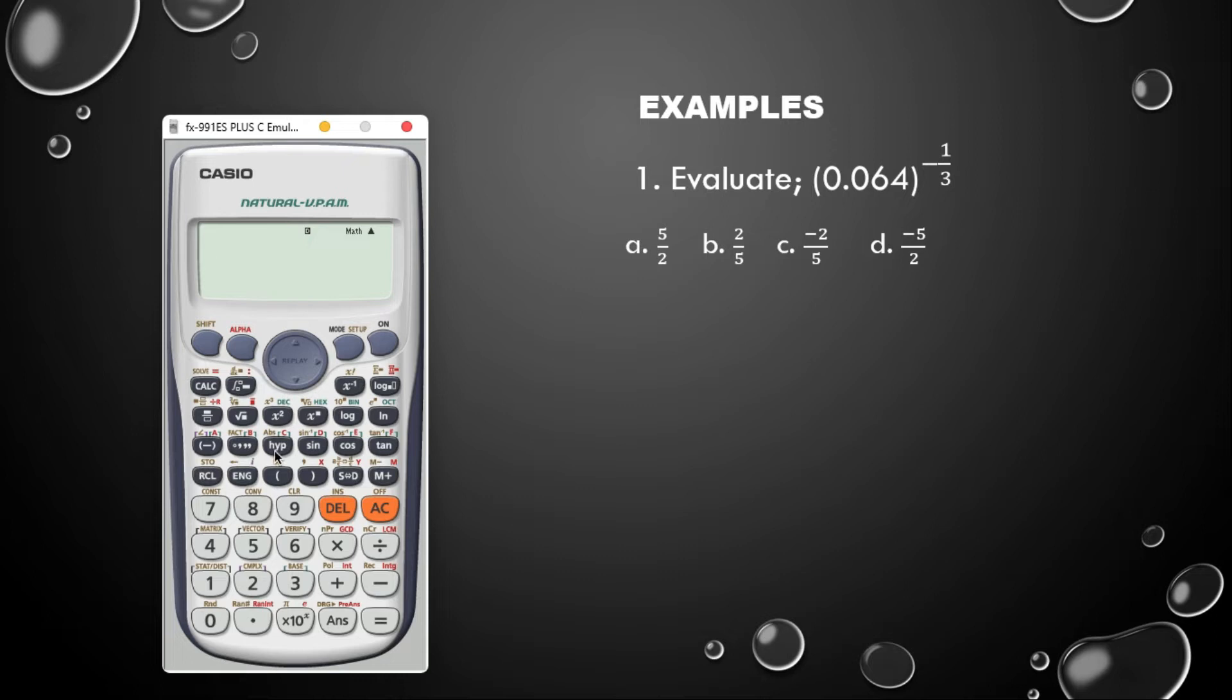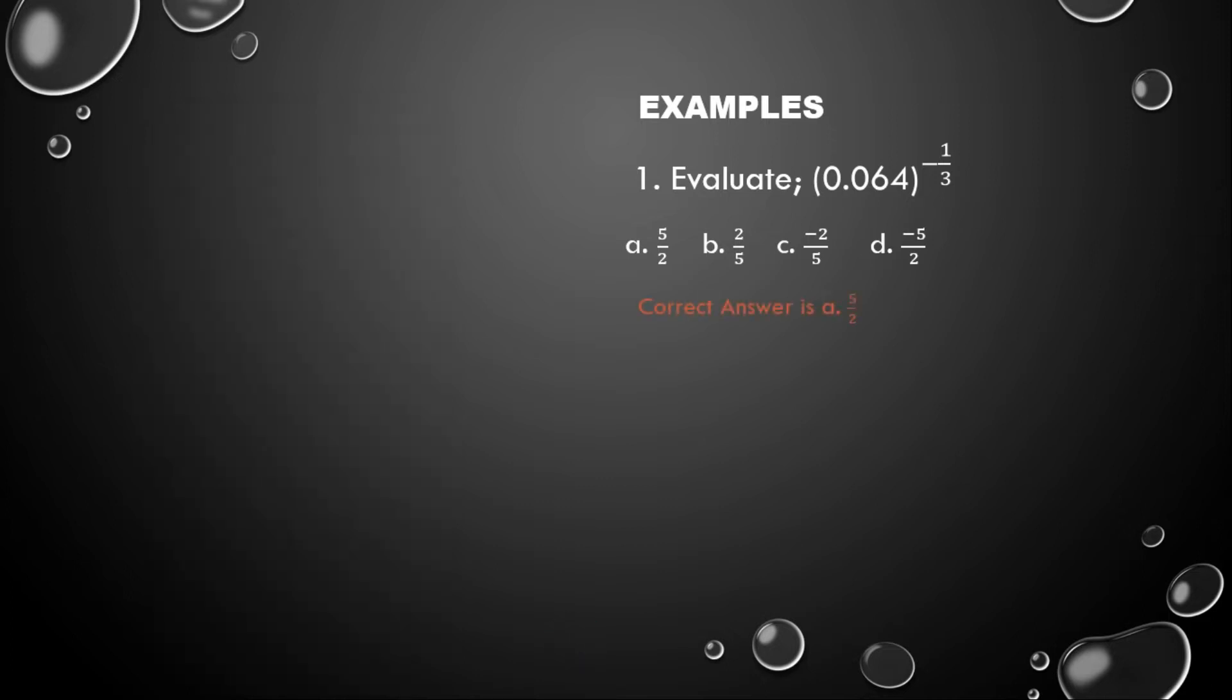So I type it inside the calculator: bracket open, 0.064, then you close the bracket, exponent negative 1 on 3, press the equal sign. So the answer is five over two. Obviously our result is A. Next example.